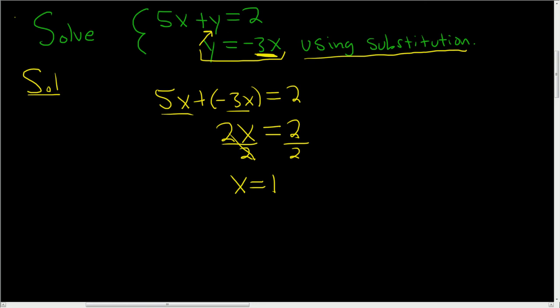To finish, we can take the x and plug it into any of the other two equations. So let's use this one, because this one's really easy. So y equals negative 3x. So y equals negative 3 times 1, which is negative 3.